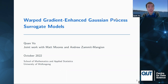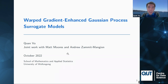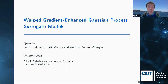Thank you, Josh. My name is Kwan Voo and I'm currently a PhD student at the University of Wollongong. Today I'll be talking about work on gradient-enhanced Gaussian process surrogate models, and this is joint work with two of my PhD supervisors, Matt Morris and Andrew Zemmick-Mandran.